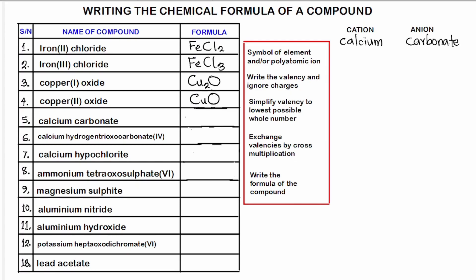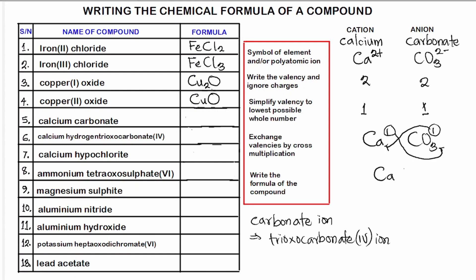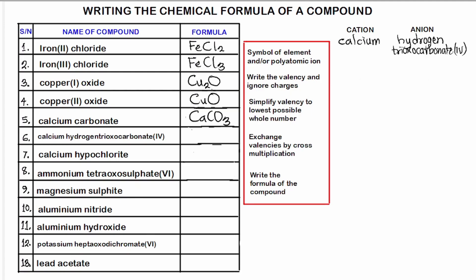Number five: calcium carbonate. The formula for calcium is Ca²⁺ while the carbonate ion is CO₃²⁻. The valency of calcium is 2 and carbonate is 2. Simplifying 2:2 gives 1:1. Cross-multiplying gives Ca₁(CO₃)₁, which simplifies to CaCO₃ — the chemical formula for calcium carbonate.